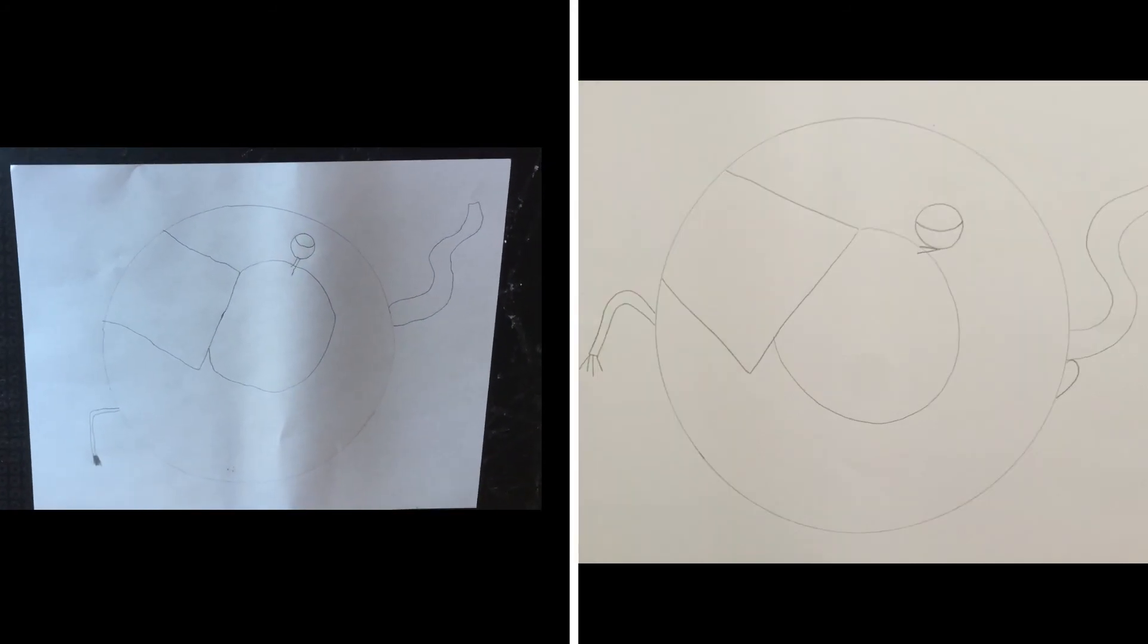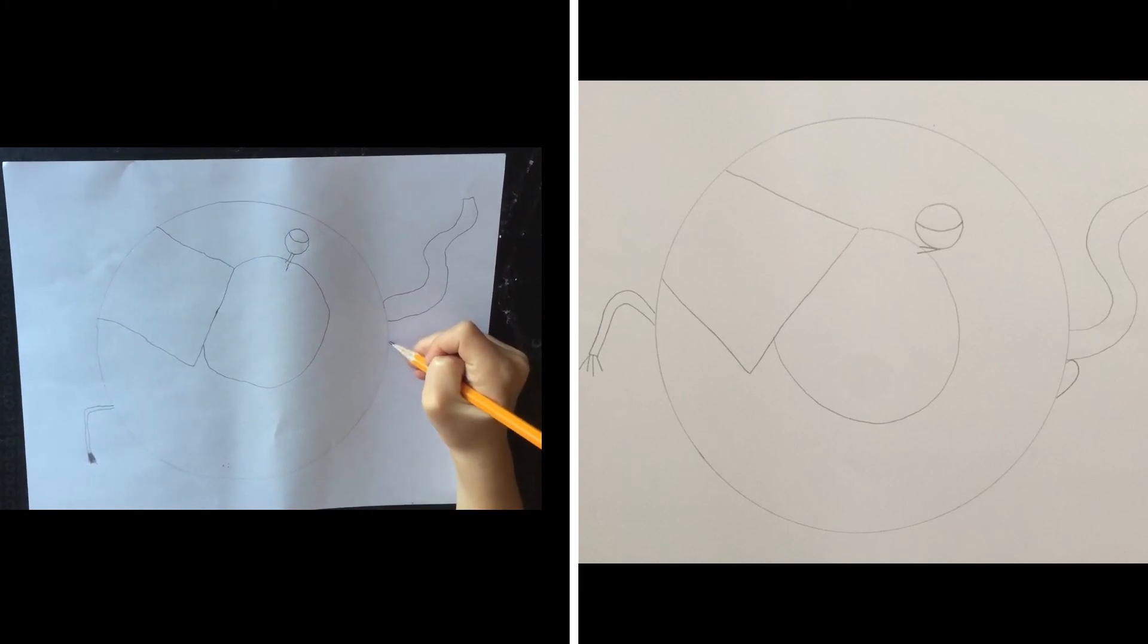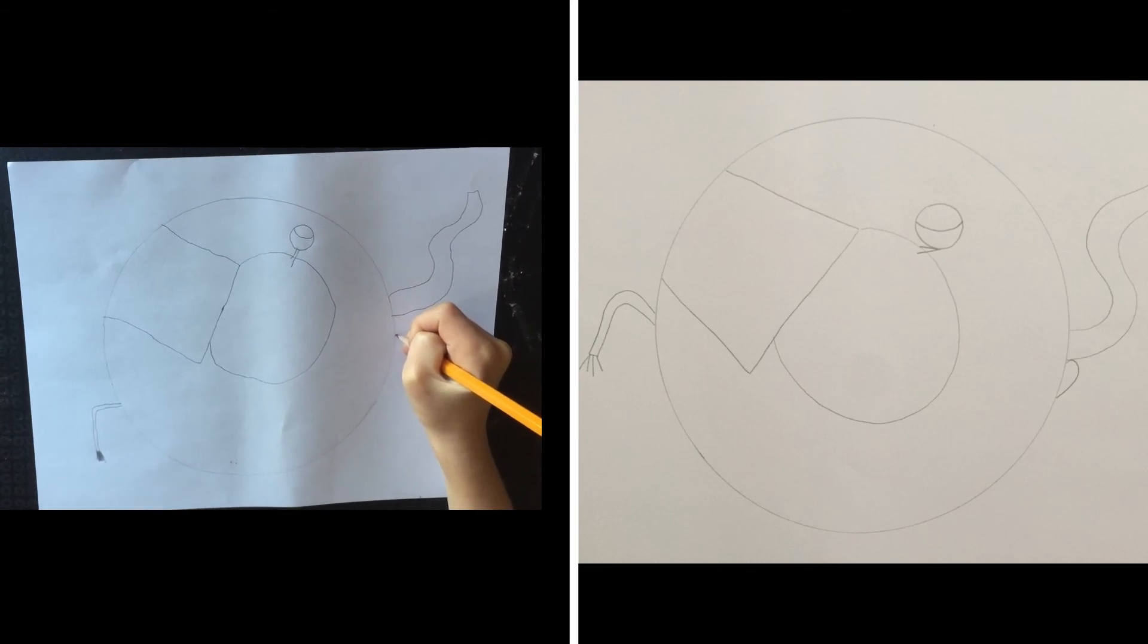So the last thing is Piano Elephant needs a little mouth and his mouth is heart shaped. So right underneath his trunk, we're going to make a half of a heart.